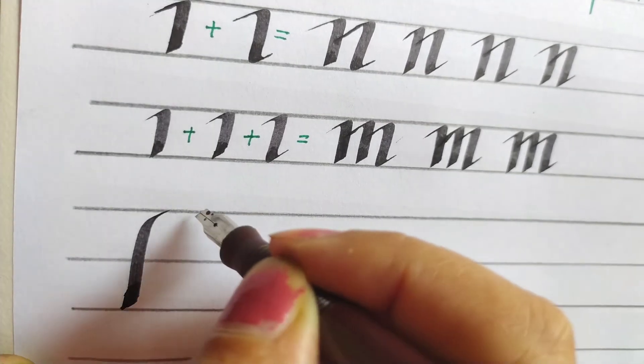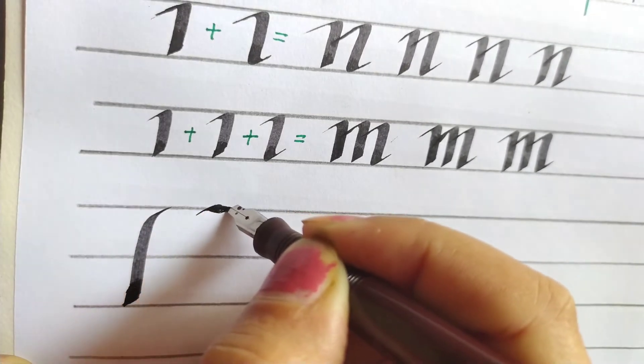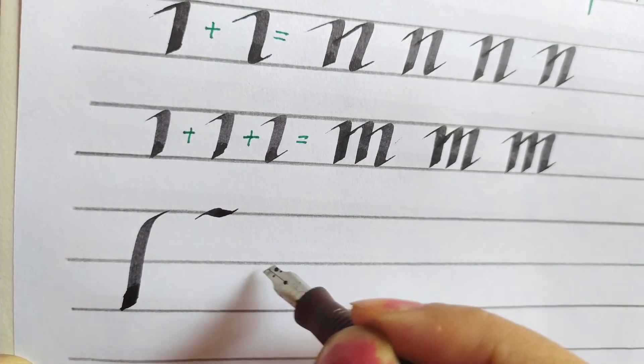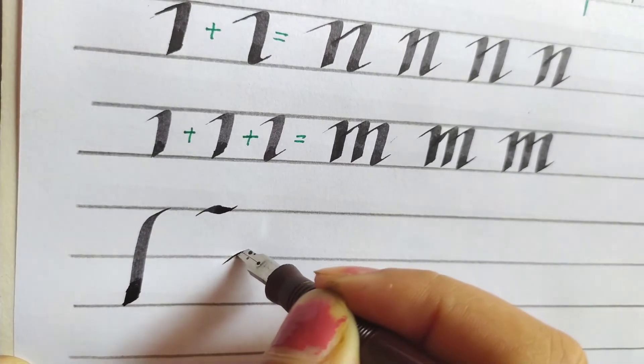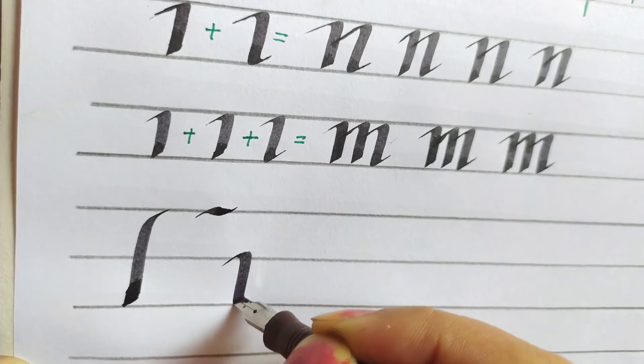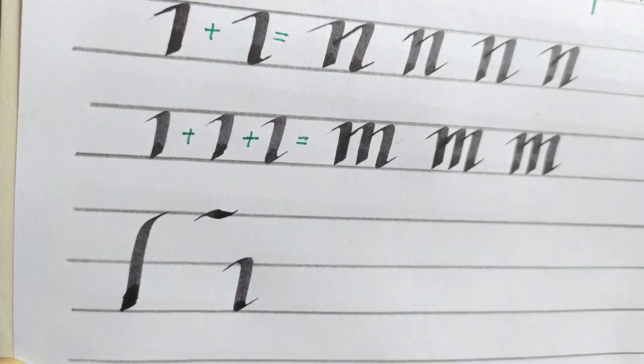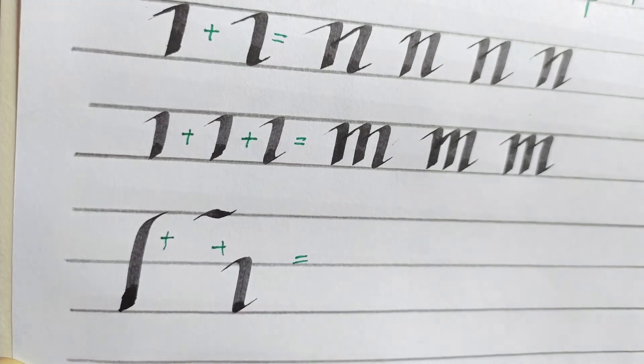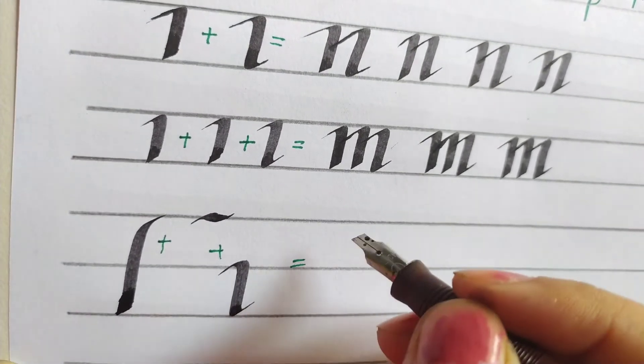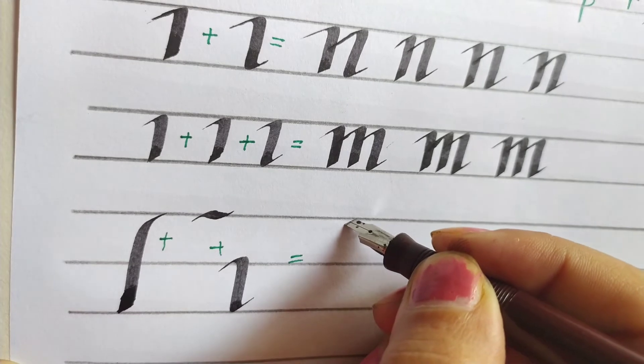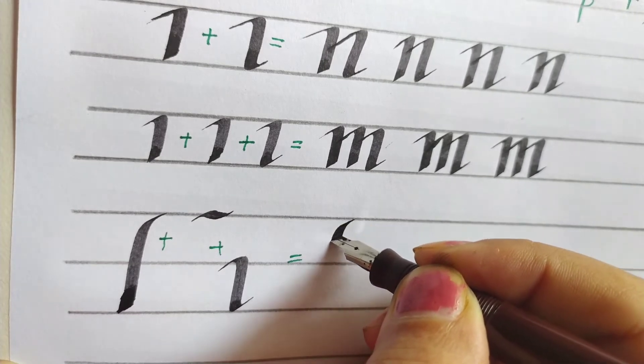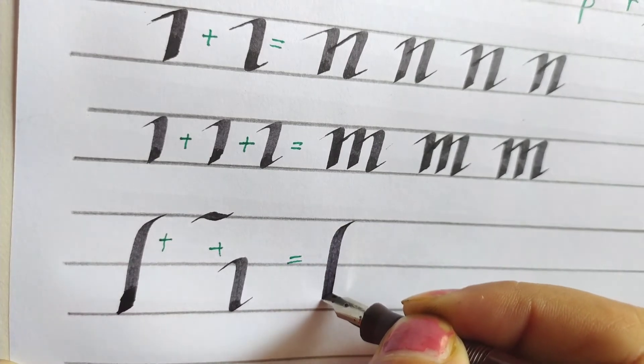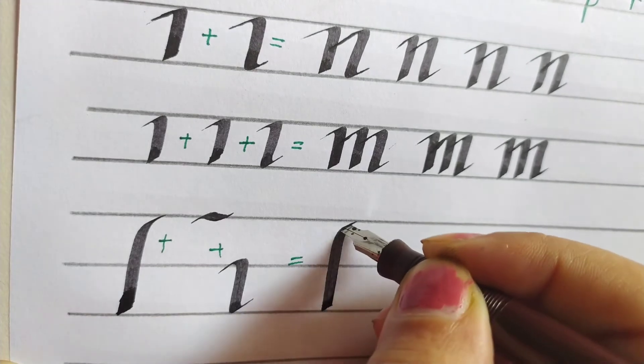Then we will add this at the top and this at the top, and after combining all these we will get alphabet H.